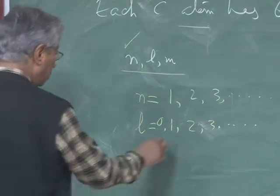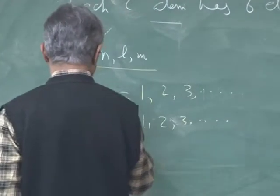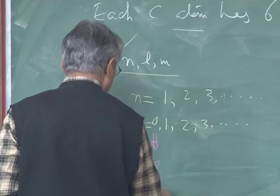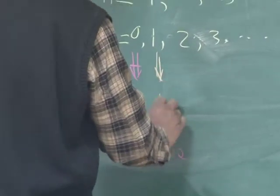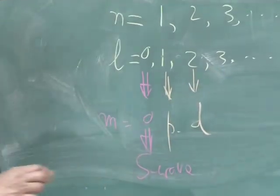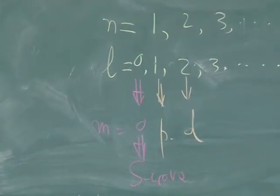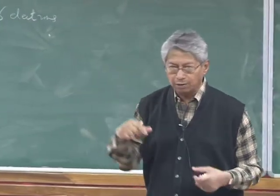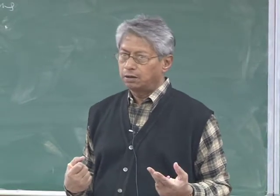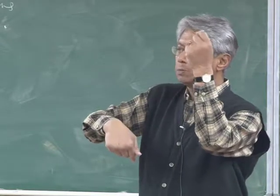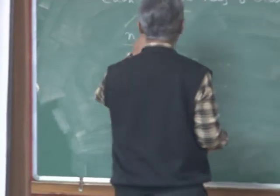If L is equal to 1 you have P; if L is equal to 2 you have D, and so on. From high school we know that orbits are distributed with 2N² occupation. If N equals 1, the closest shell, you can have 2 electrons because you can have spin up or spin down without violating the Pauli principle. So you start filling in the 6 electrons that carbon has.